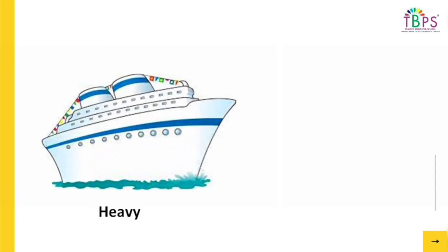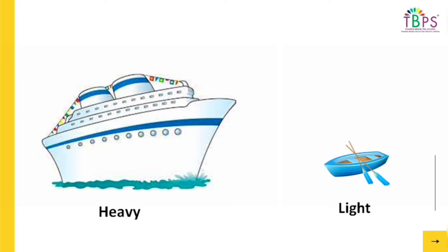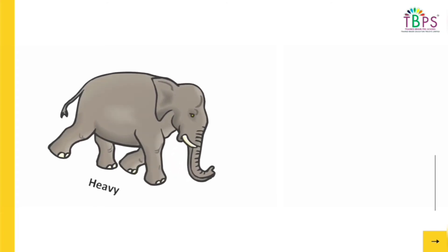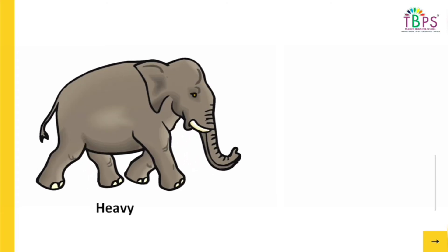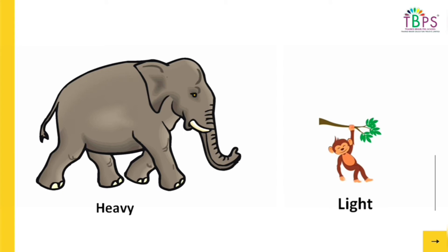This ship is very heavy. What about the boat? The boat is very light. Elephant is heavy, and the monkey is very light.